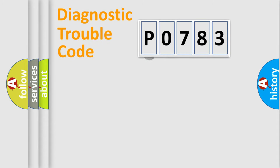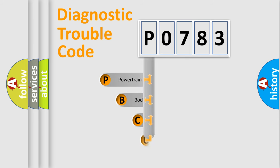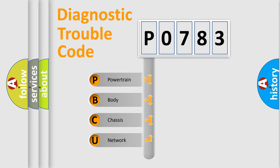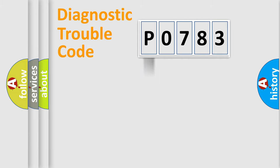First, let's look at the history of diagnostic fault code composition according to the OBD2 protocol, which is unified for all automakers since 2000. We divide the electric system of the automobile into four basic units: Powertrain, Body, Chassis, and Network. This distribution is defined in the first character of the code.